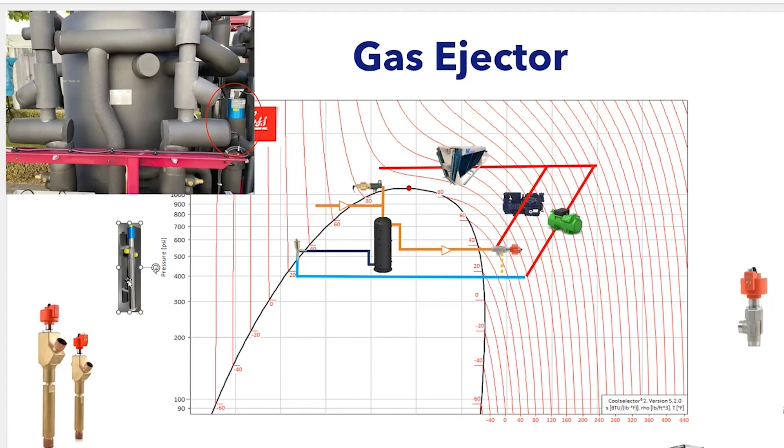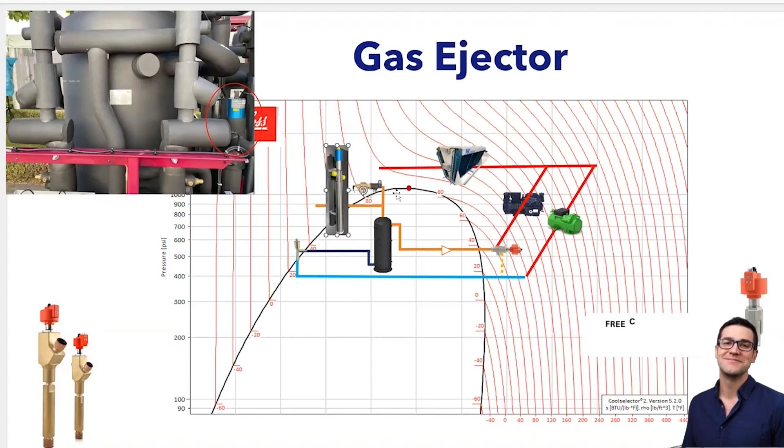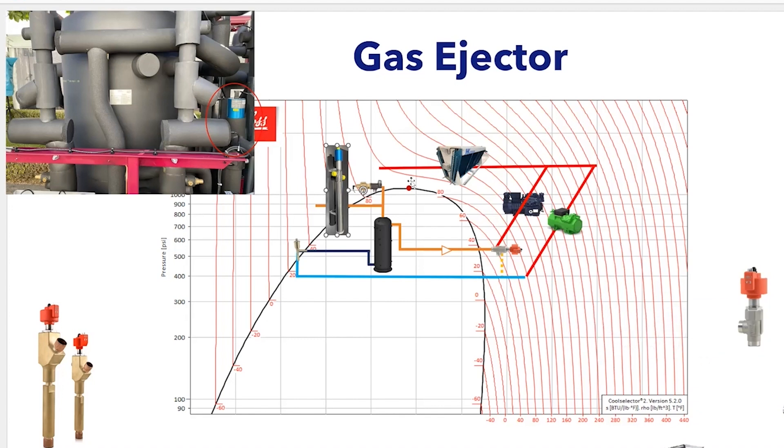Where the ejector comes in now, instead of going through your high pressure valve, this ejector is actually acting as your high pressure valve. In theory, you don't need a high pressure valve, but most manufacturers will have an ejector valve in parallel with another high pressure valve. When that ejector valve maxes out, it'll move over to the high pressure valve.